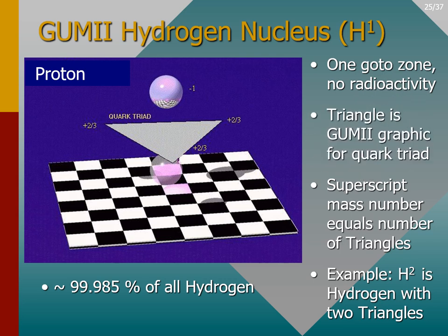Notice that the triangle is the GUMMI graphic for quark triads — three quarks taken together are called a triad. We've started to build up the nucleus one quark triad, or triangle, at a time. The first triangle is just our old friend the proton, or the hydrogen atom. The superscript mass number in the upper right corner will always equal the number of triangles, and the mass number can also be written with a dash after the element name. Hydrogen-1 has one triangle, or one quark triad. Hydrogen-2 is hydrogen with two triangles. Hydrogen-1 is the most abundant form of hydrogen — almost all of the hydrogen on Earth is in this form.